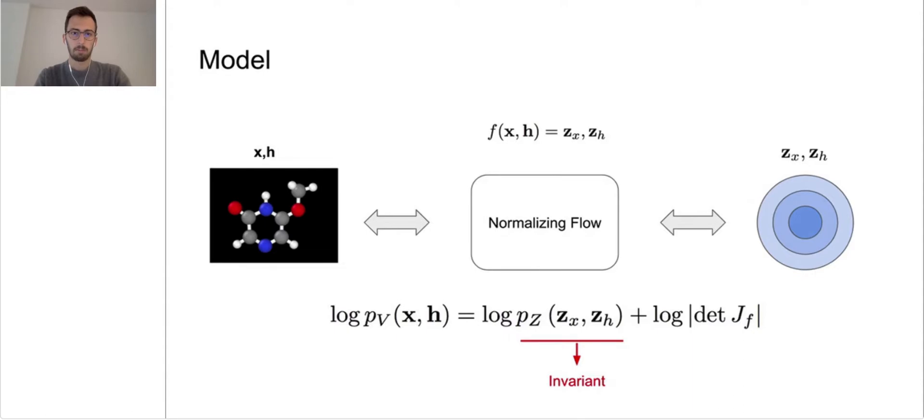We designed p(z) to be invariant to Euclidean transformations and the function f to be equivariant by using the mentioned EGNN, such that the estimated likelihood of each molecule will be invariant to its position and orientation.